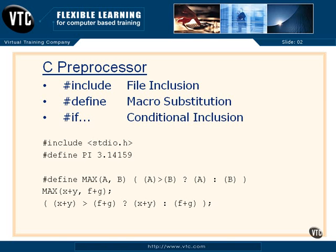And also conditional inclusion with various forms of pound if. We'll look at those in another slide. So what we've already worked with: pound include standard IO dot H. We looked at the angle brackets versus double quotes before, to show the difference of including standard IO dot H out of the typical installation-dependent location where header files are stored, as opposed to using double quotes, which starts in the directory containing the dot C source file.